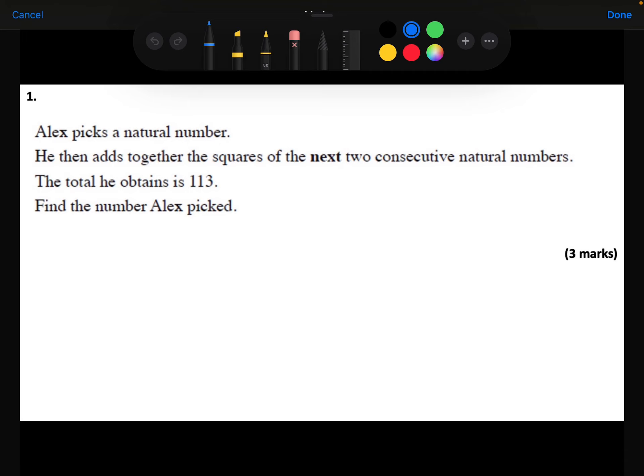So he picks a natural number, let's call that x. He then adds together the squares of the next two consecutive natural numbers. So the one after x would be x plus 1, and the one after that would be x plus 2. And he's adding together the squares of those. And he gets 113.